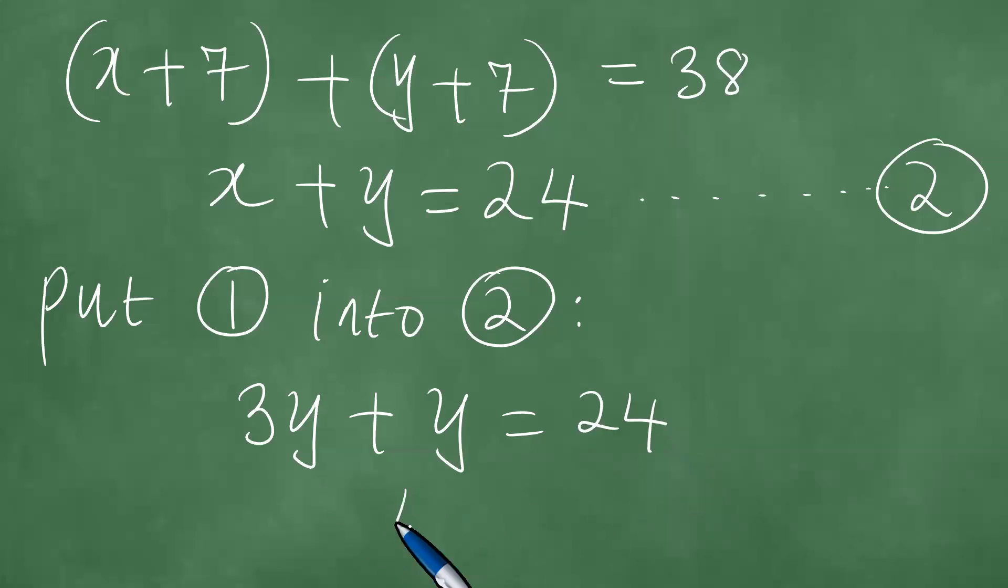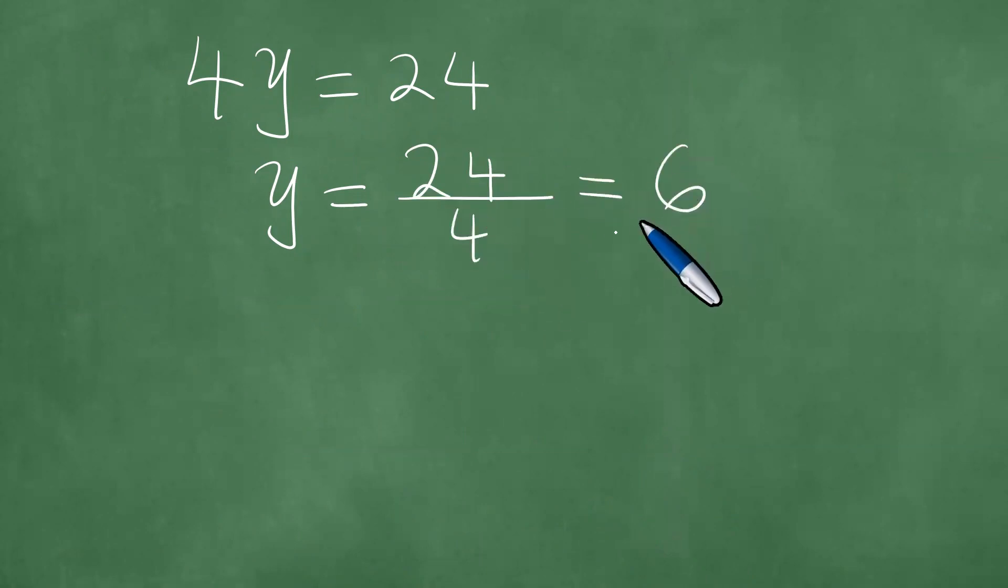Right. And if you add these two guys, you get a 4y equals 24. If this is the case, that 4y equals 24, we can divide both left and right by what? By 4, so that y is equal to 24 divided by 4, and the result is 6.